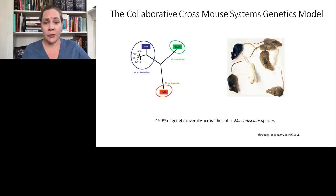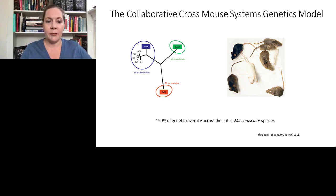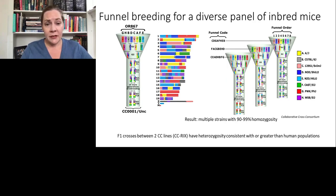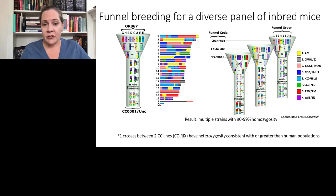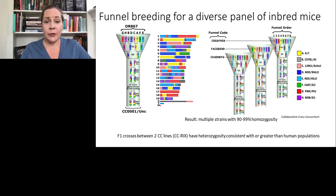So we began using the collaborative cross mouse systems genetics model. This model incorporates over 90 percent of the genetic diversity across the entire Mus musculus species, compared with conventional inbred laboratory mice, which only encompass about 11 percent of that genetic diversity. This is a panel of mice generated through a funnel breeding scheme — the result of crossing eight different mouse genetic backgrounds together. Five of these are conventional laboratory mice and three are wild-mouse-derived. After this breeding scheme, these multiple funnels result in a panel of mice that are reproducible and inbred, but are genetically distinct from one another and have expanded genetic diversity. So we decided to try to model Ebola virus disease using this model.